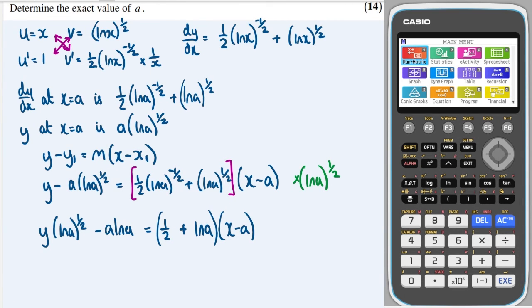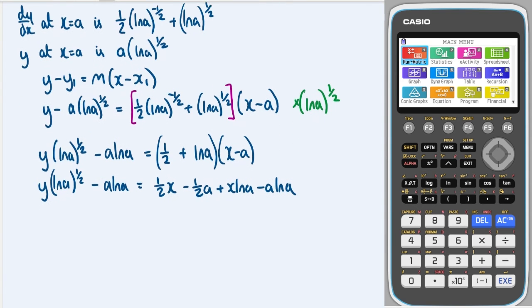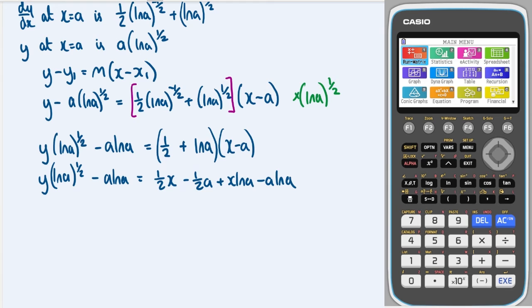Okay. And next we would multiply out these brackets. So this side will stay the same for now. And here we'll get a half x and minus a half a and plus x ln a and minus a ln a. We could do some cancelling. We can cancel these from both sides.